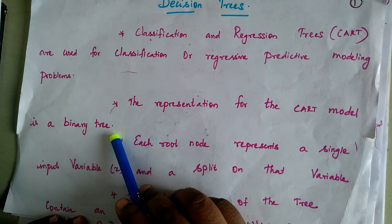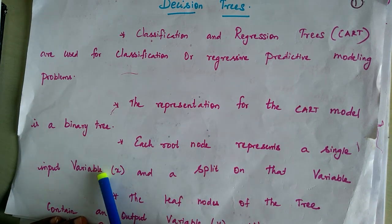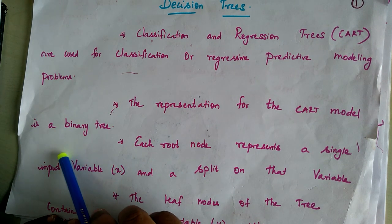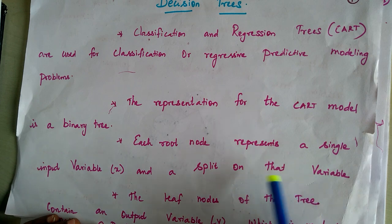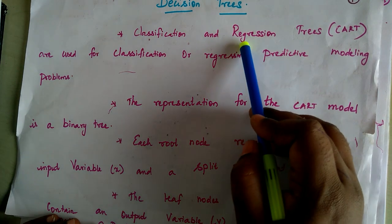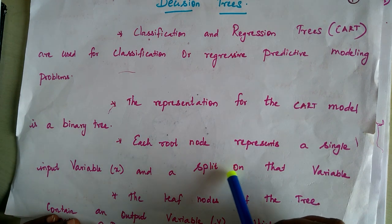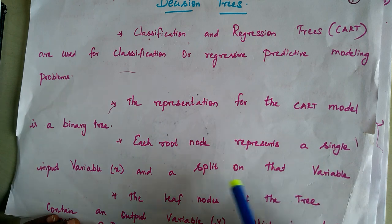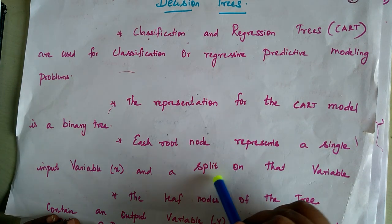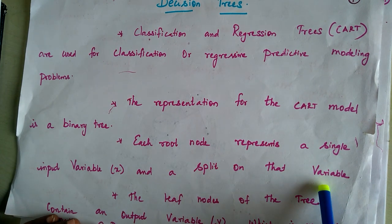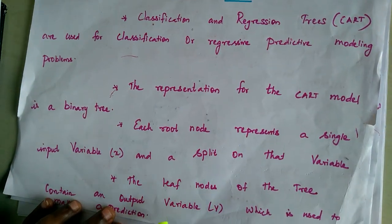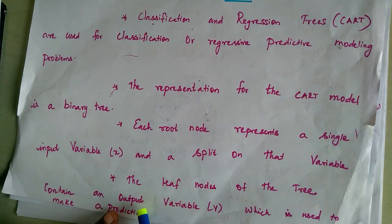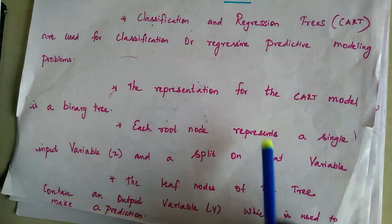A binary tree is a data structure in which each node has two children. Each parent node will have an input variable and a split on that variable. The split is given by the feature or attribute of the input variable. For example, in regression, if the square feet is less than 1000, the rent is 10,000 rupees. The leaf node of the tree holds the outcome — the output variable — which can be a classification or regression prediction.